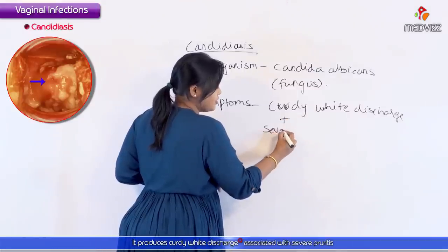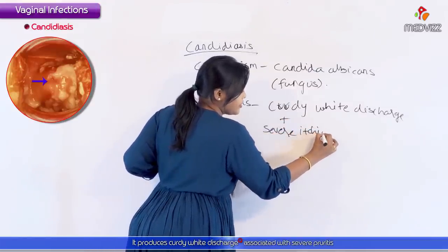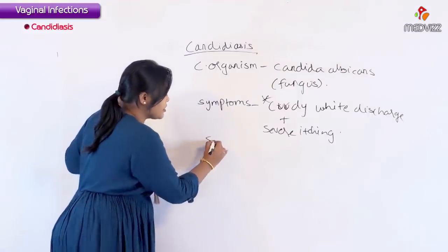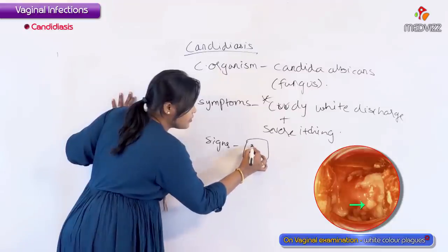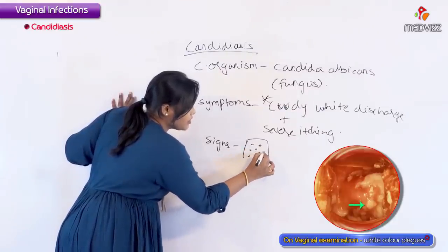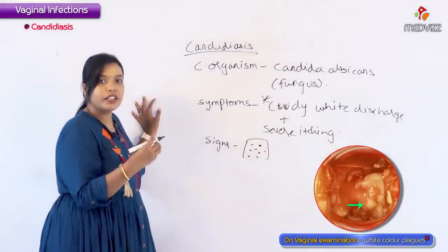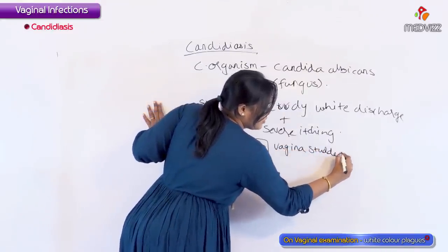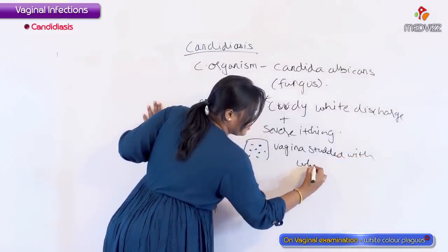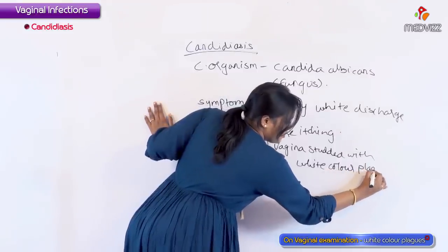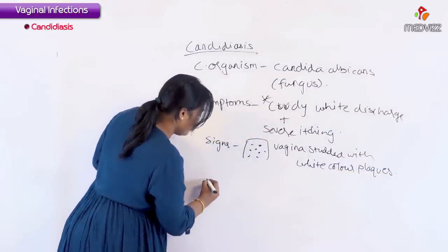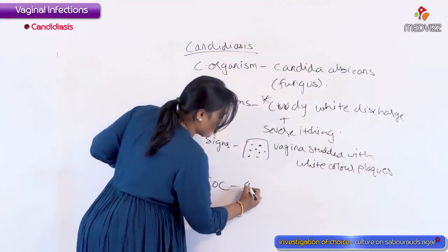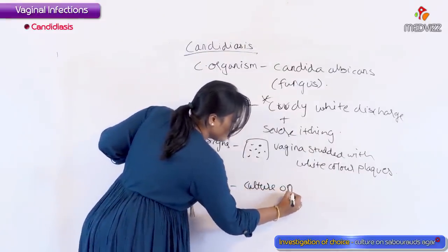The curdy white discharge is associated with severe pruritus — severe itching. Regarding signs, the vagina will be studded with white color plaques. When you try to pluck those plaques out, there will be bleeding. This is the characteristic sign of candidiasis. The investigation of choice is culture on Sabouraud's agar.